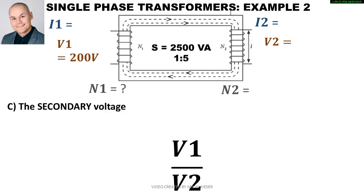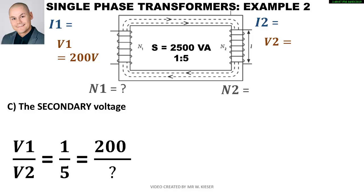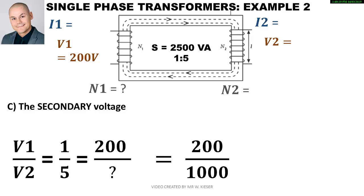To calculate the secondary voltage, we use our equation with the turns ratio of 1 to 5. We have 1 on the primary and 5 on the secondary, and we already calculated this in the first part of the question. Therefore V2 equals 1,000 volts.